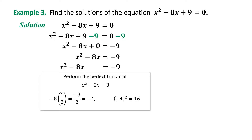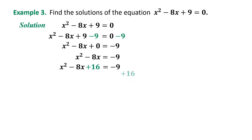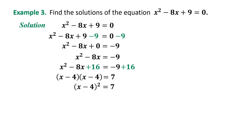We add +16 to both sides. Factor x² - 8x + 16. The factors are (x - 4)(x - 4) = -9 + 16 = 7. Simplifying, (x - 4)² = 7.